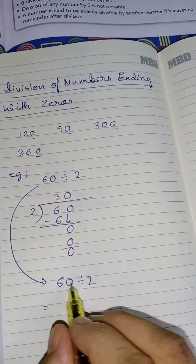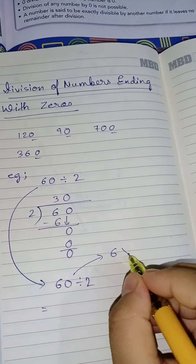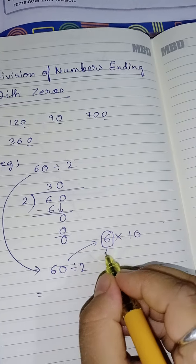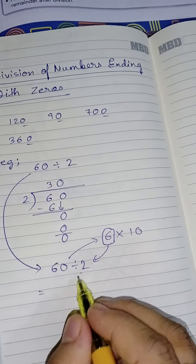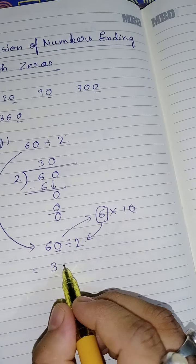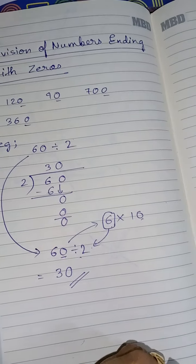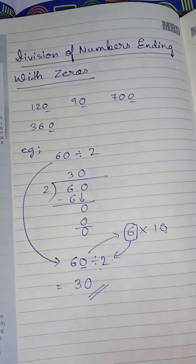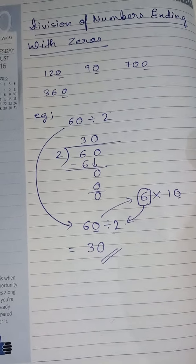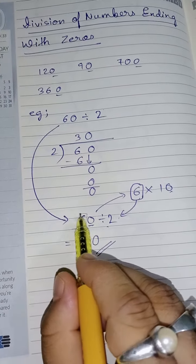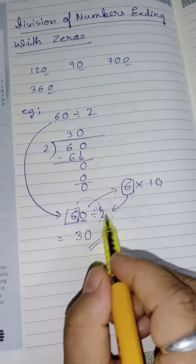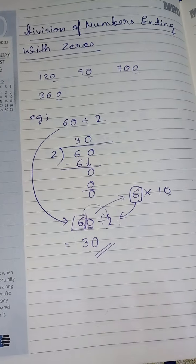But think of this number as 6 into 10. So I can divide simply this 6 by 2. So 6 divided by 2, we know it is 3. Now how many zeros are there? There is only one ten, so put a zero here. Your answer is done. So you can divide such numbers directly also without even doing the division. You just need to divide the non-zero number with the given divisor, write down that answer, and put as many zeros present there.